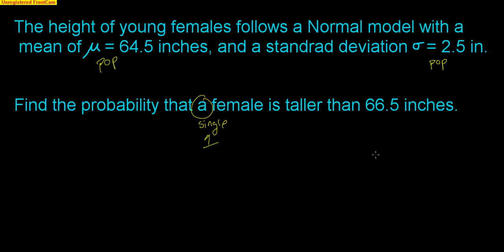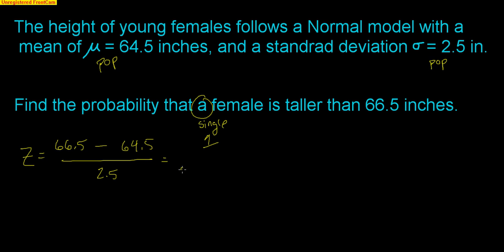This is straightforward — we're talking about one female from the population, not a sample. All you have to do is find a Z-score: 66.5 minus 64.5 equals 2, divided by 2.5, giving a Z-score of 0.8. Using normal CDF from 0.8 to 99, we get a probability of 0.2119.